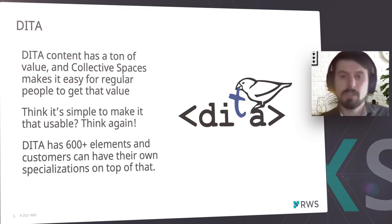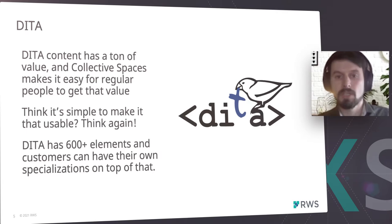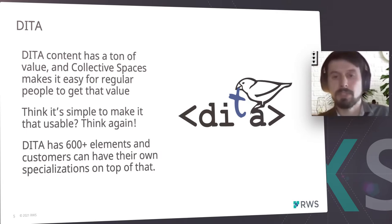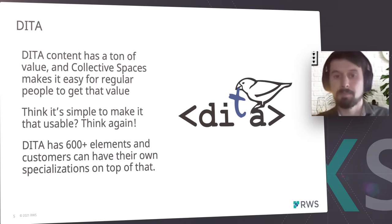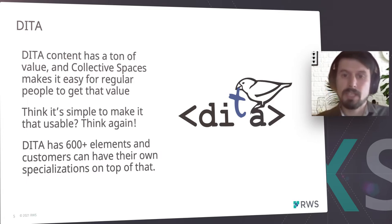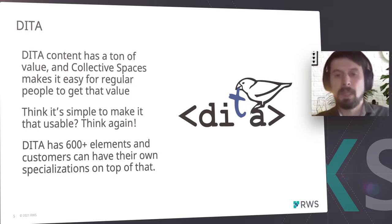Unfortunately, it's not so easy to make that usable — and Bert also showed that in his presentation. For DITA, we have more than 600 elements and customers can have their own specialization on top of each element. This means we actually can't have all configuration done in the out-of-the-box product, and this brings us closer to why we actually needed DSL.